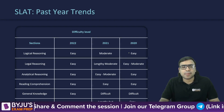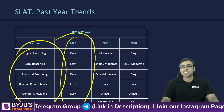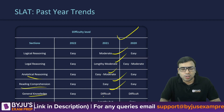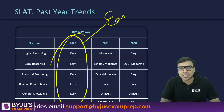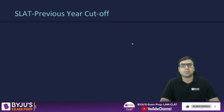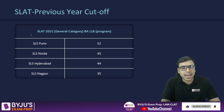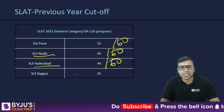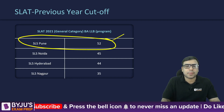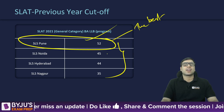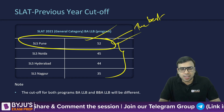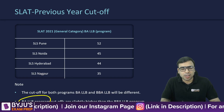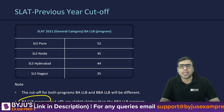Regarding past year trends: in 2022 all five sections were easy. In 2021, Logical Reasoning was moderate, Legal Reasoning was lengthy and moderate, Analytical Reasoning was easy to moderate, Reading Comprehension was easy, and General Knowledge was difficult — overall moderate but lengthy. When the paper is easier, cutoffs go up. For the General category, previous year cutoffs were: SLS Pune 52/60, SLS Noida 45/60, SLS Hyderabad 44/60, and SLS Nagpur 35/60. BBALLB cutoffs are slightly lower than BLLB cutoffs.